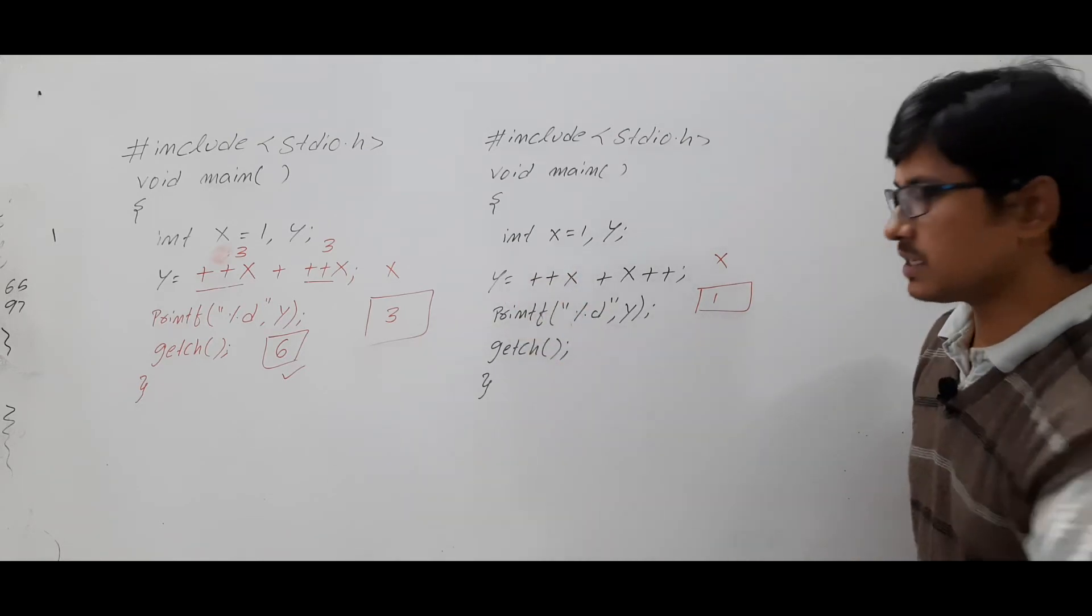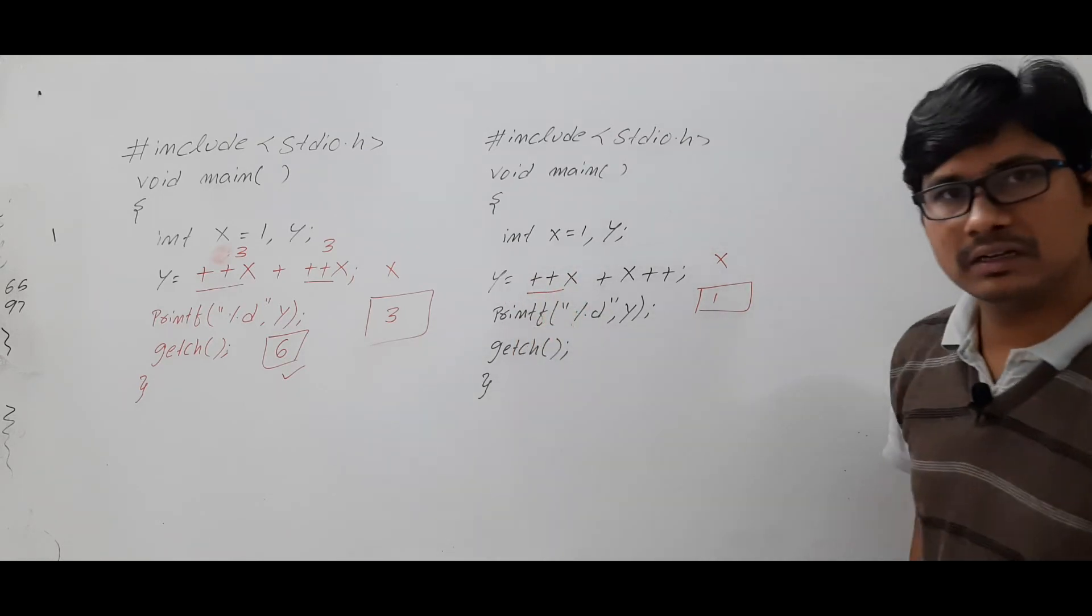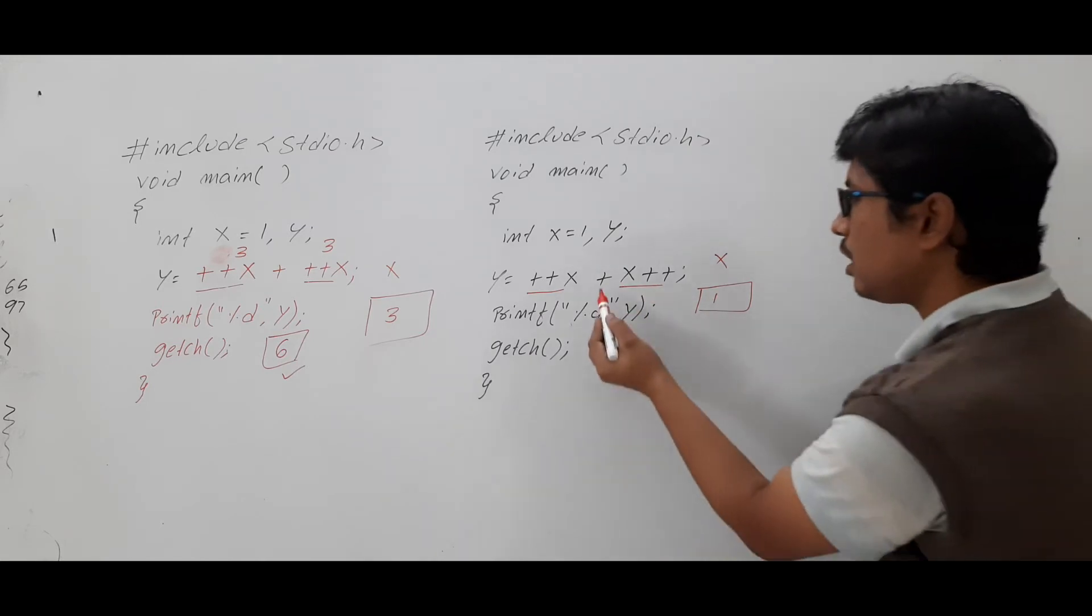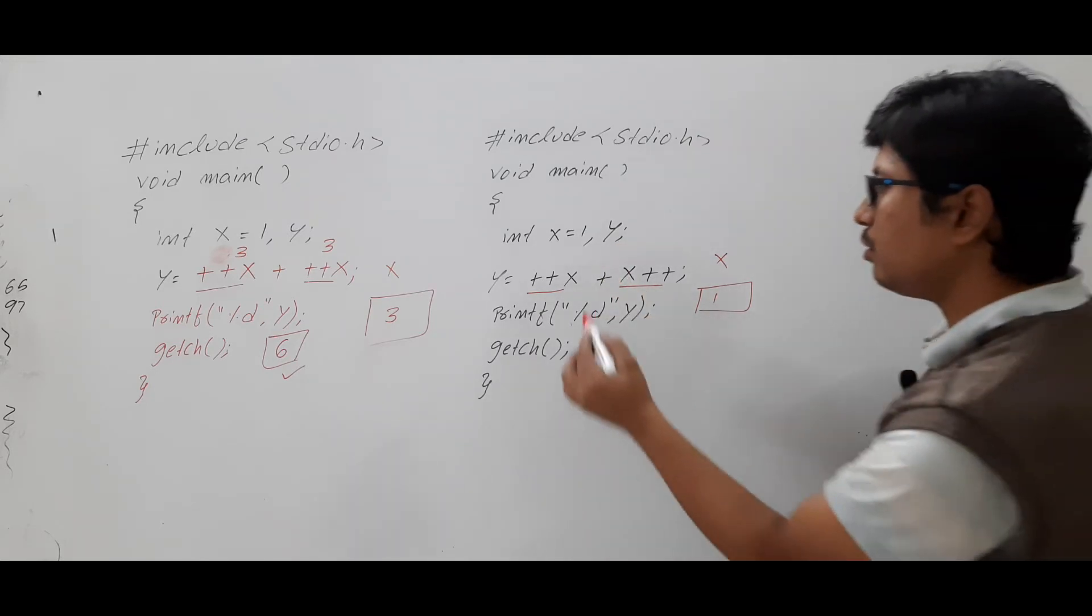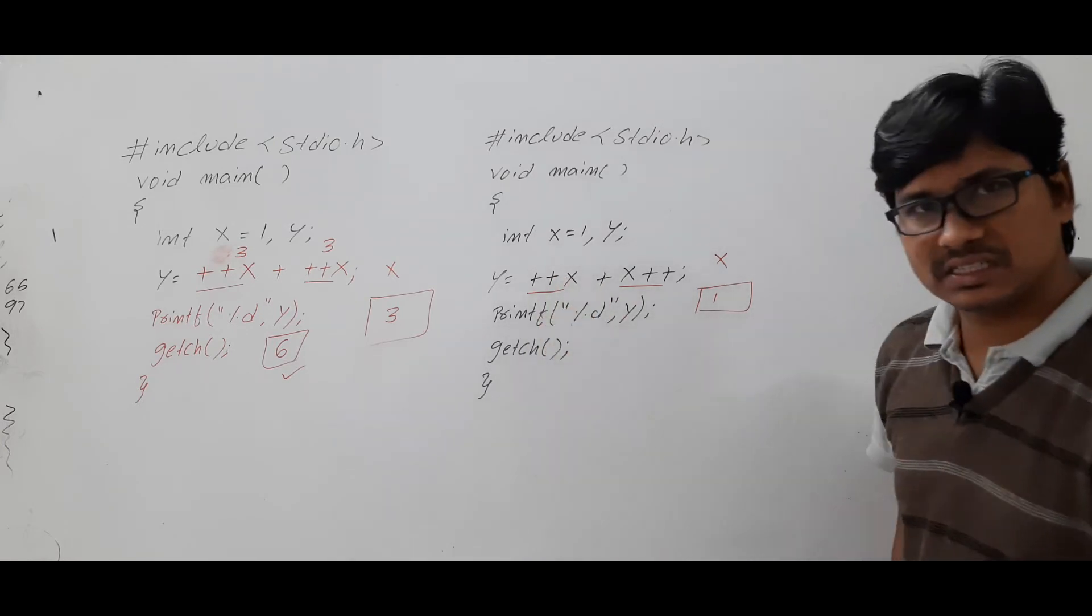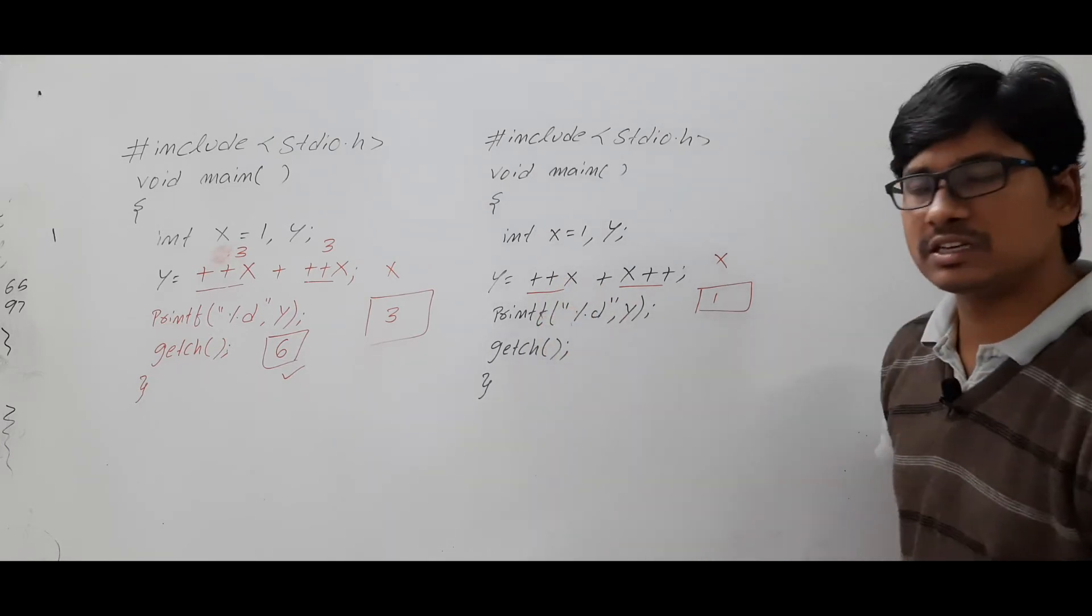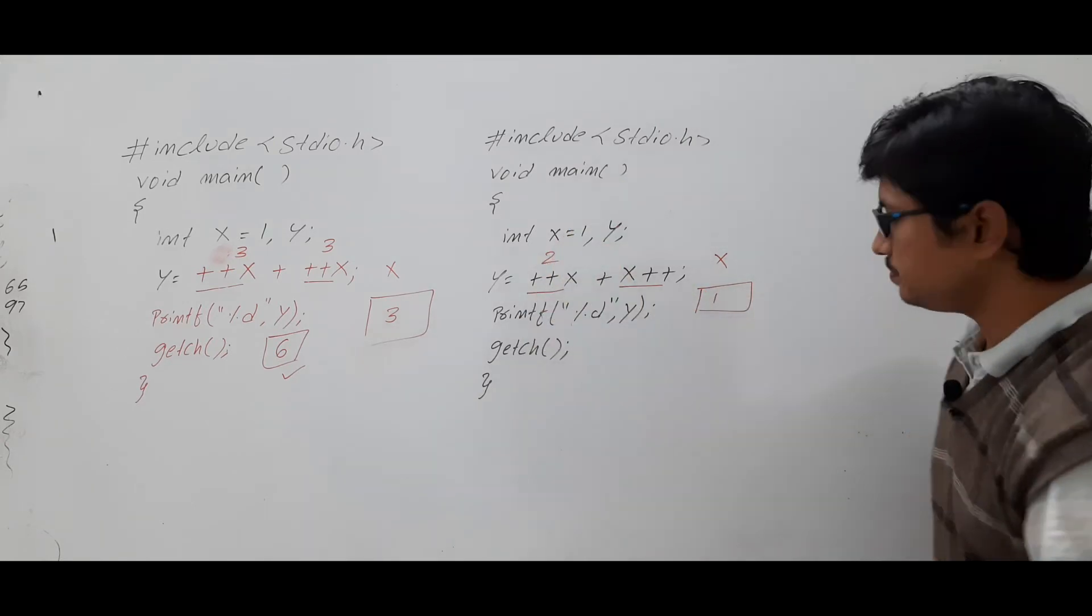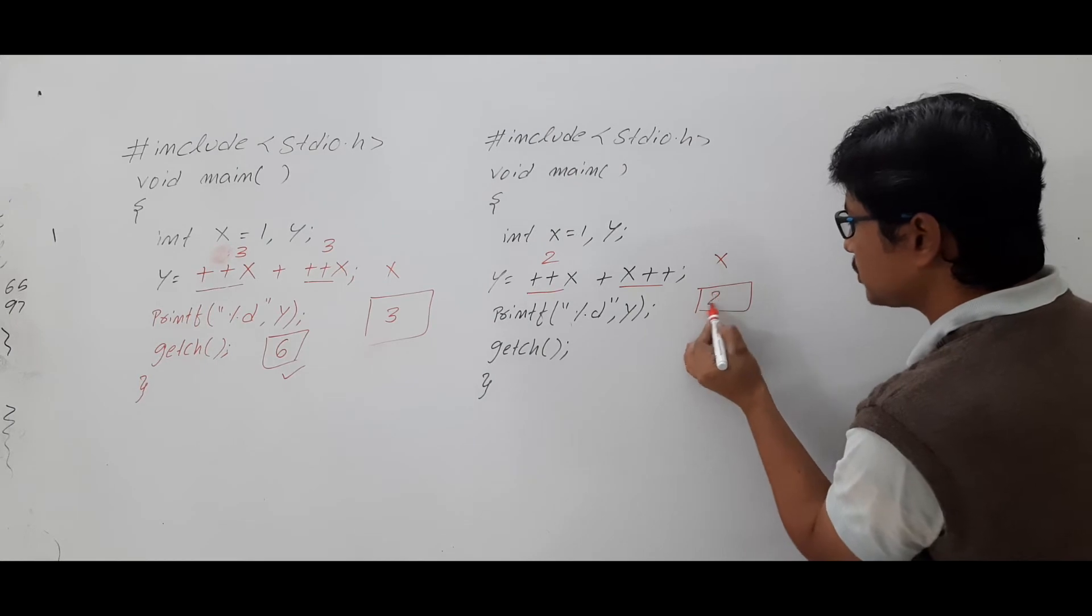Now y is equal to plus plus x. This is a pre-increment. And this is a post-increment. And then you have to perform the addition. Now first you need to perform the pre-increment. Plus plus x. Plus plus x is nothing but x value is 1. It will be updated to 2. x value is 2.